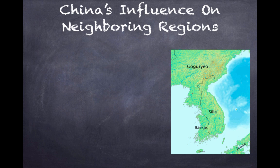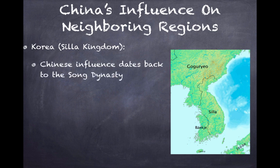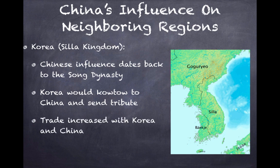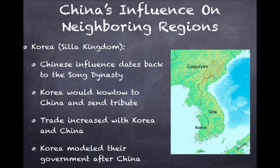Now let's jump over to China's influence on neighboring regions. We'll start with Korea under the Silla Kingdom. Chinese influence dates back to the Song Dynasty. Korea would kowtow to China — this ritual of bowing where one's head would actually touch the floor — to recognize that they were subservient to China. They would also send tribute in the form of money or goods. Trade increased between Korea and China, and Korea modeled their government after China, so China had a very large influence on Korea.